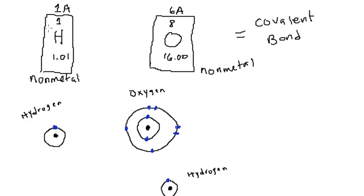Hydrogen, on the other hand — remember that the first shell can only hold a total of two electrons, but hydrogen only has one electron in its outer shell. I know this because of the number 1A, which tells you that you can only have one electron in its outer shell. And because hydrogen only has one proton, it can only have one electron. Oxygen, because it has a total of eight protons, can have a total of eight electrons to be neutral.